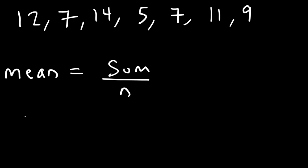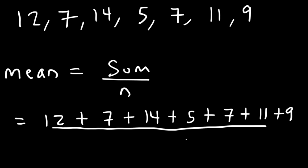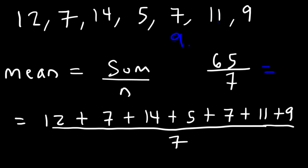So let's go ahead and do that. Let's add up 12 plus 7 plus 14 plus 5 plus 7 plus 11 plus 9. And since there are seven numbers, let's divide it by 7. The sum of the seven numbers is 65. 65 divided by 7 is equal to 9.285, or 9.286 if you round it. So that's the arithmetic mean of those numbers.